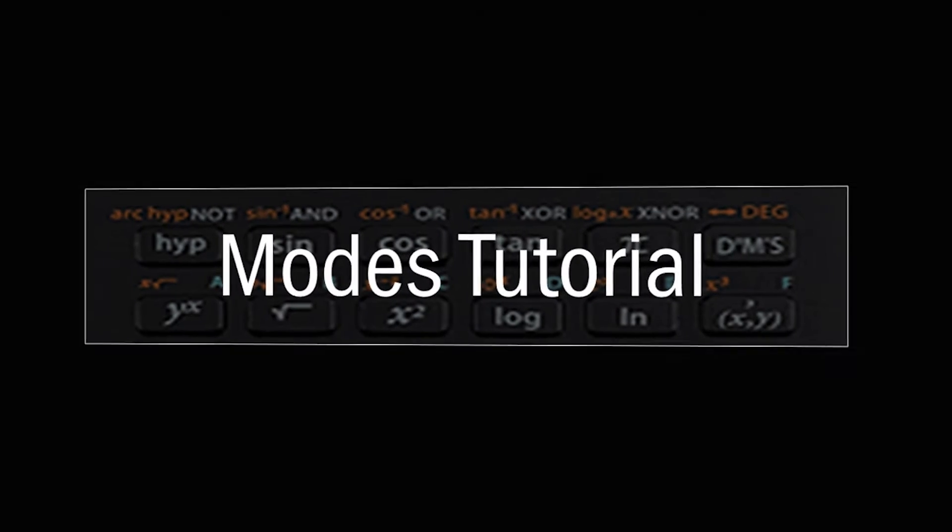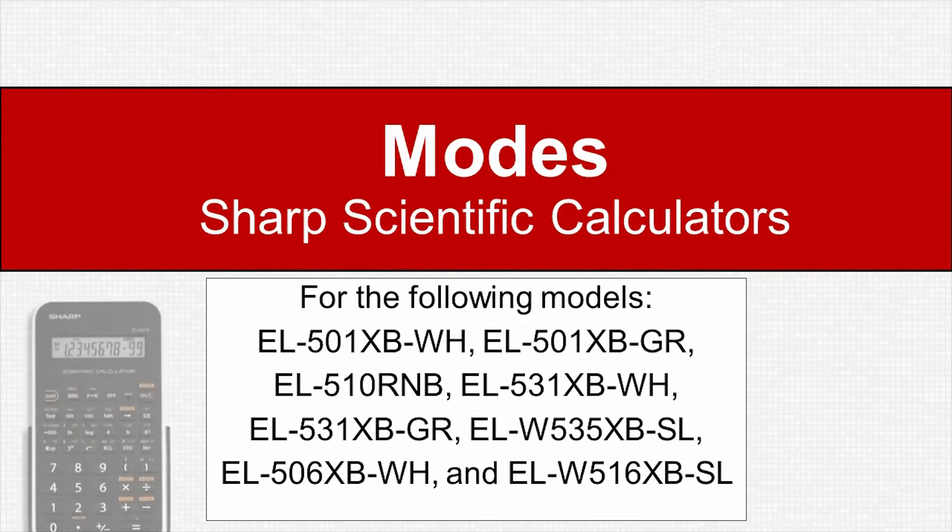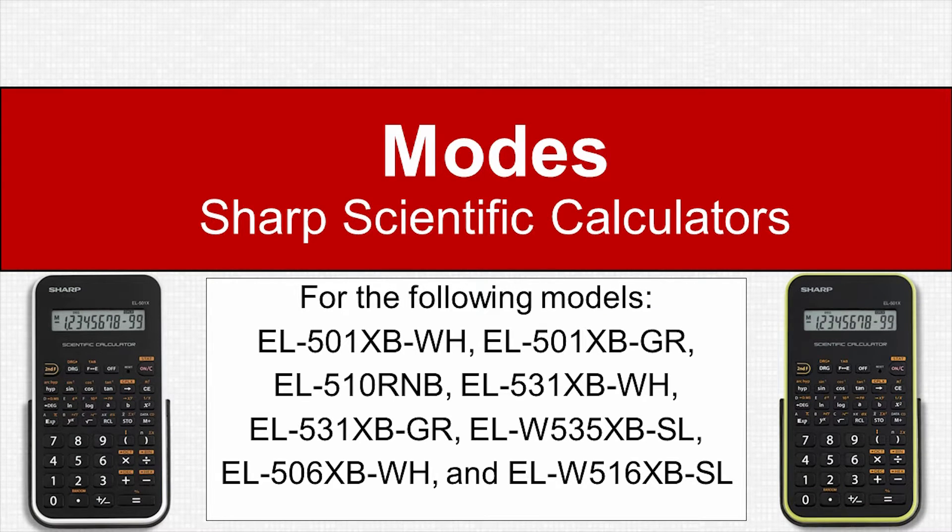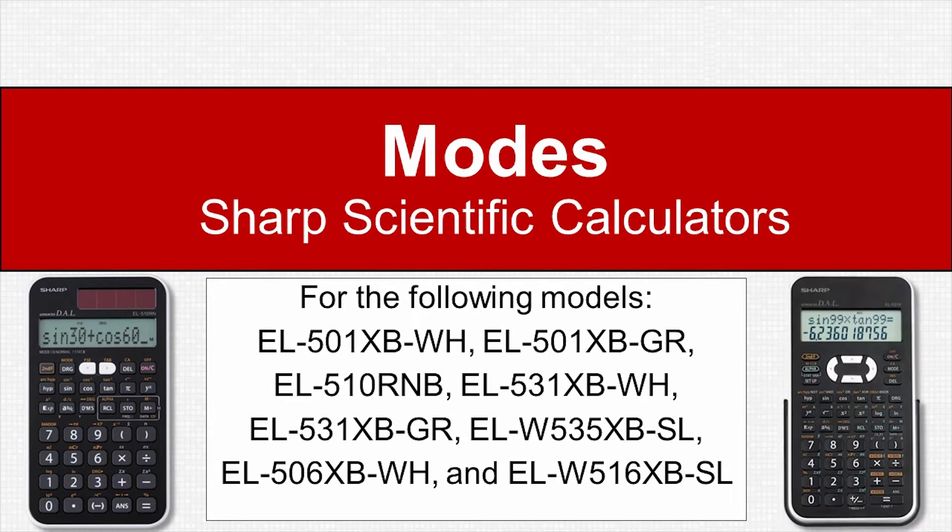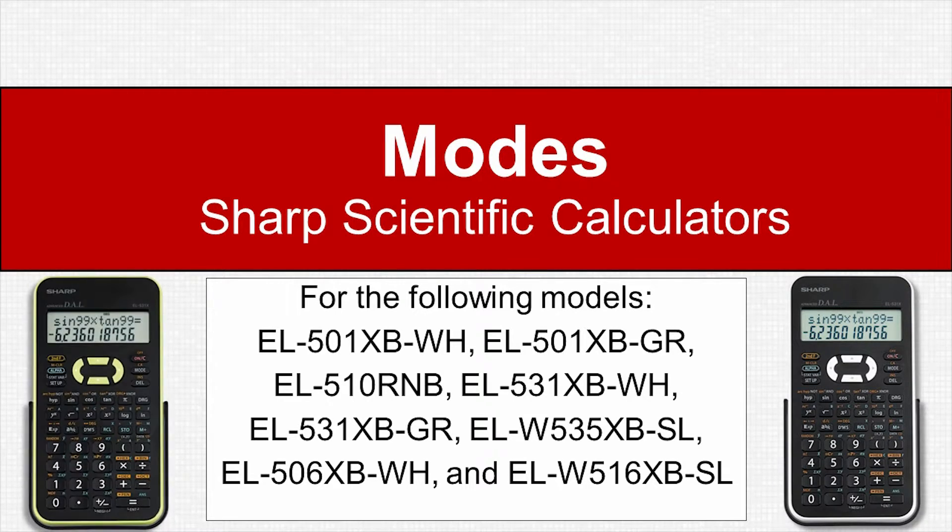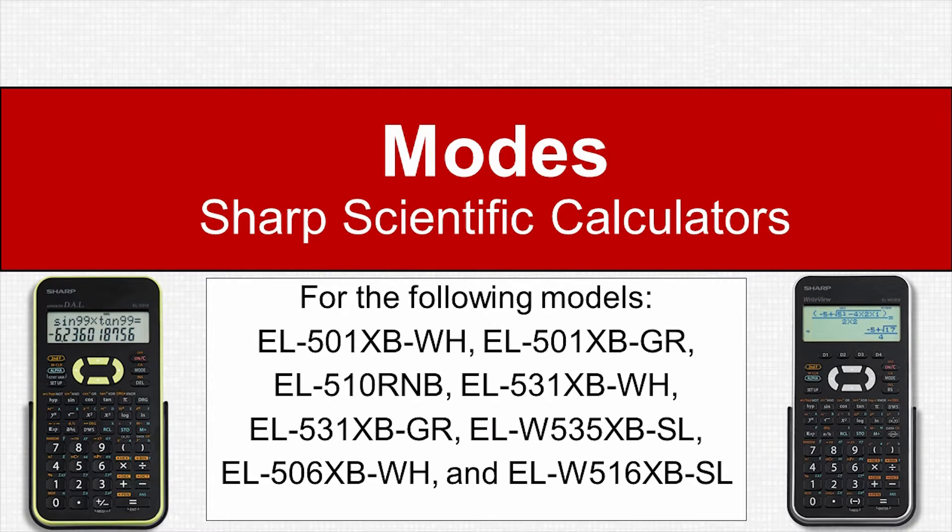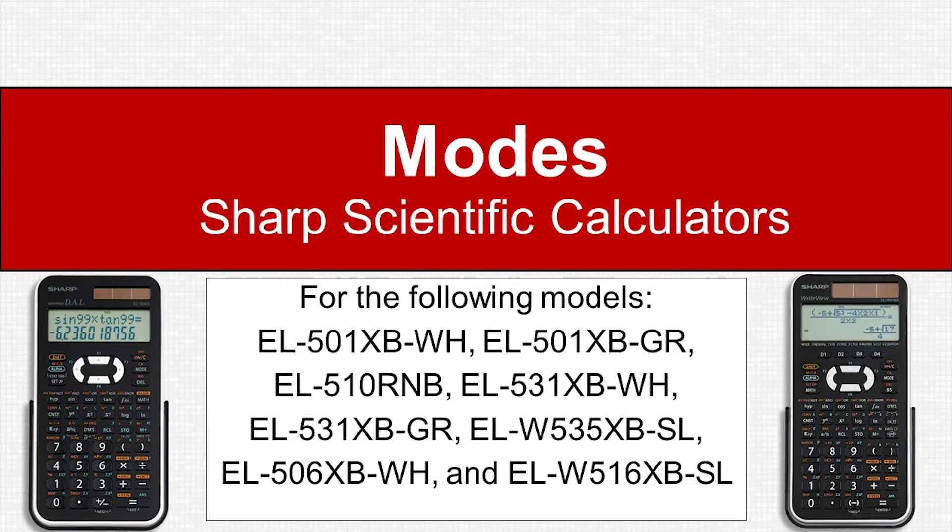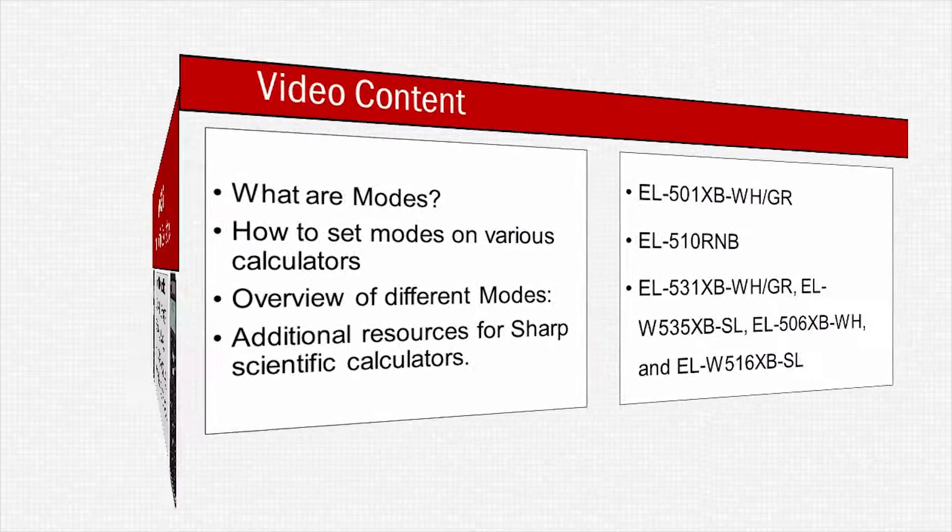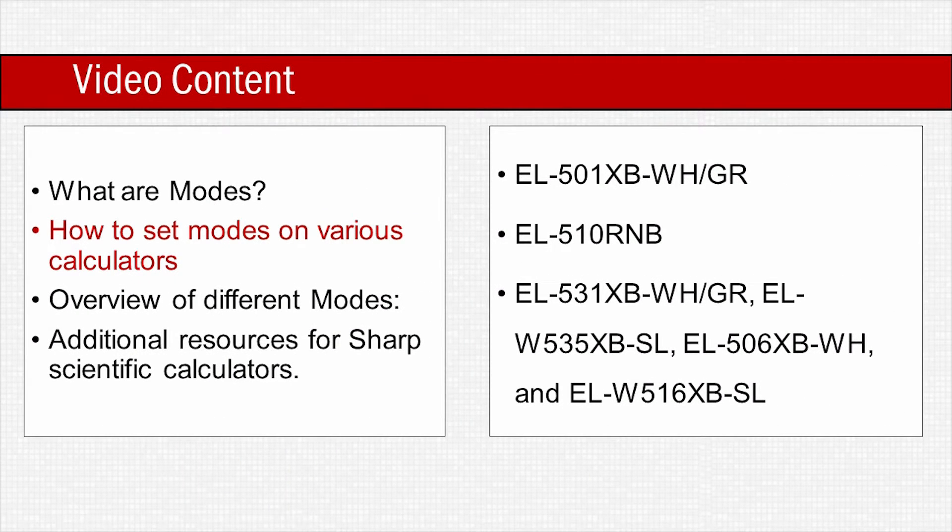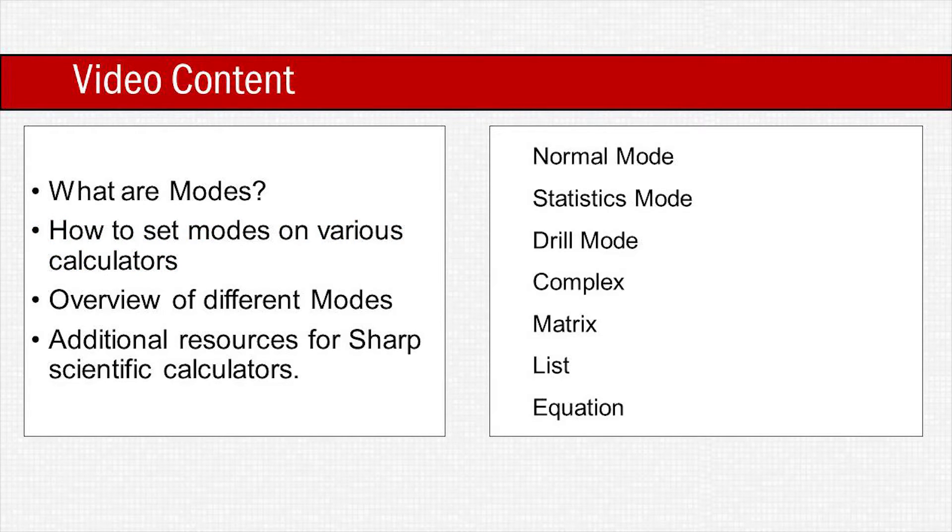Mode tutorial for Sharp scientific calculators. Models covered: EL-501XB-WH/GR, EL-510RNB, EL-531XB-WH/GR, ELW535XB-SL, EL-506XB-WH, and ELW516XB-SL. In this video we will go over what modes are, how to set modes on various calculators, and an overview of different modes such as normal, statistics, drill, complex, matrix, list, and equation mode.